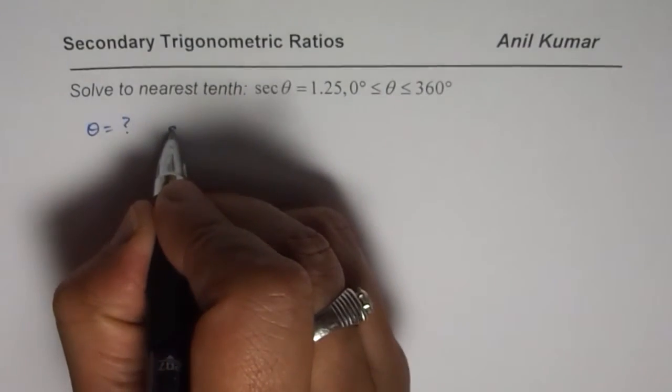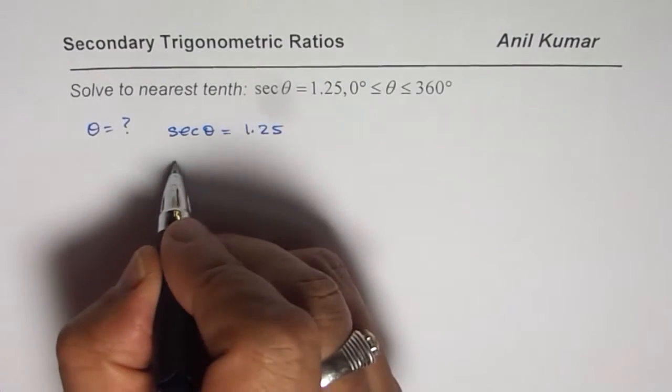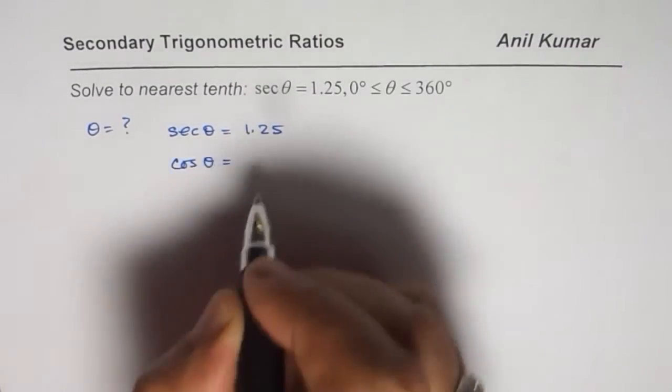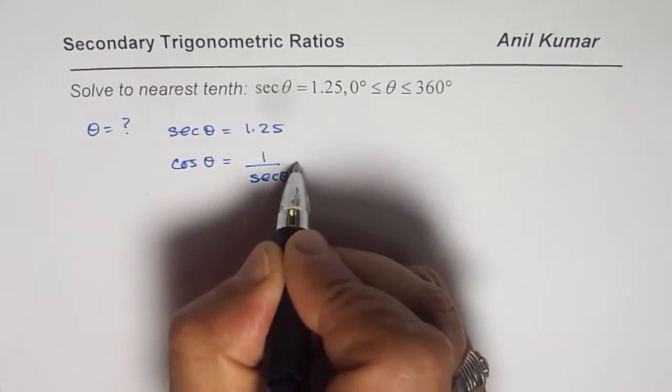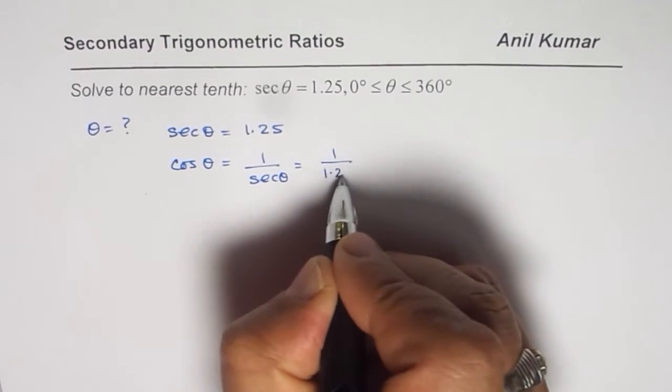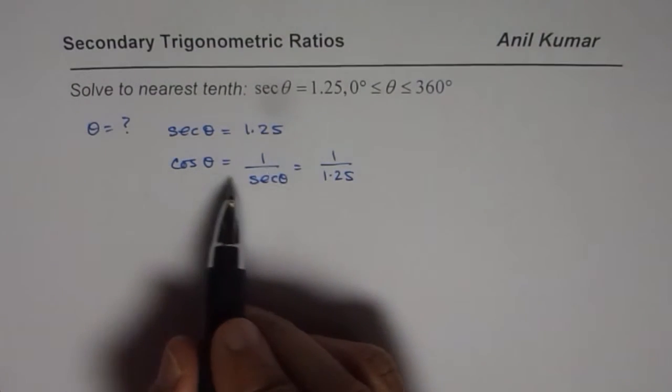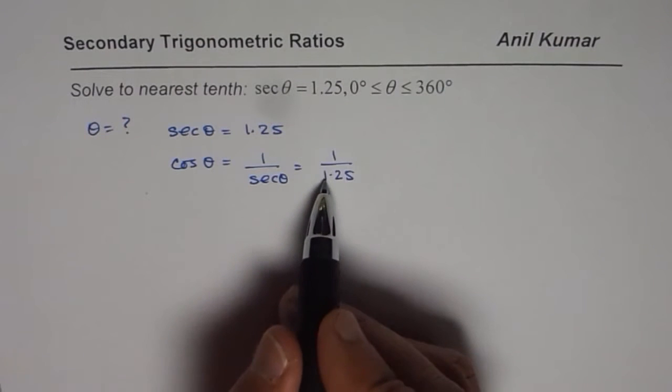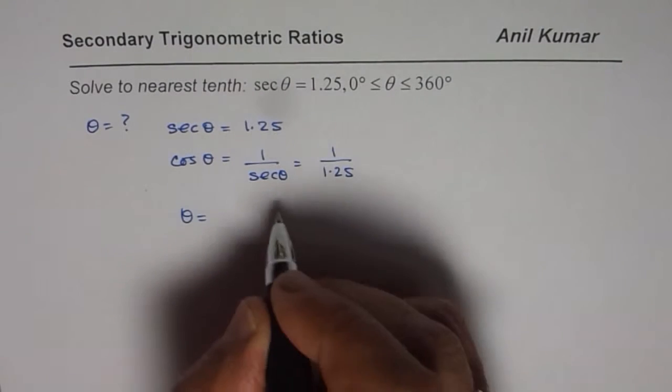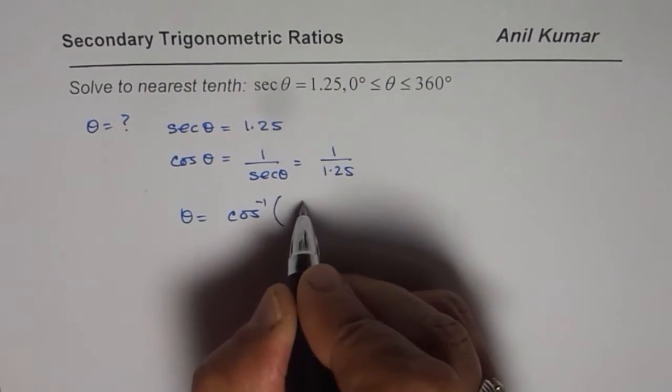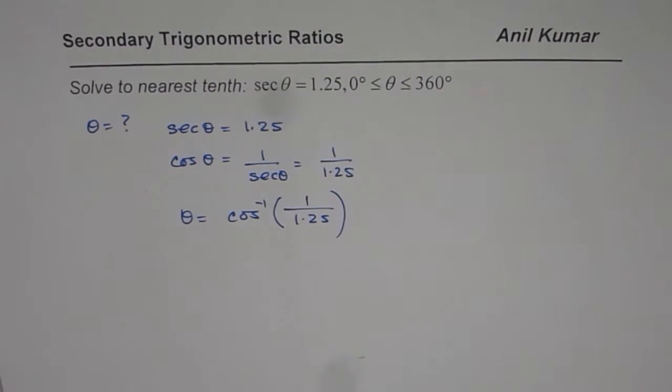So the equation is secant theta equals 1.25. What is cosine theta? Cosine theta will be 1 over secant theta, which means 1 over 1.25. That can help us to find the angle theta. So cosine theta is 1 over secant theta, so it is 1 over 1.25. And now we can say theta equals cos inverse of 1 over 1.25, and we can use calculator and find the answer.